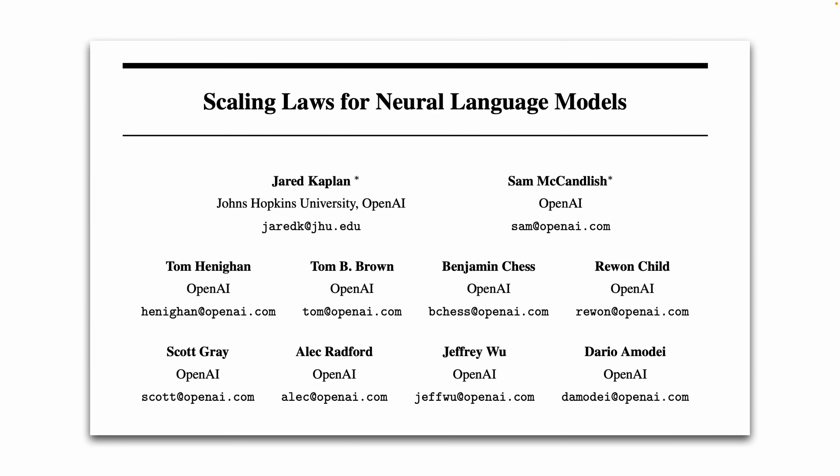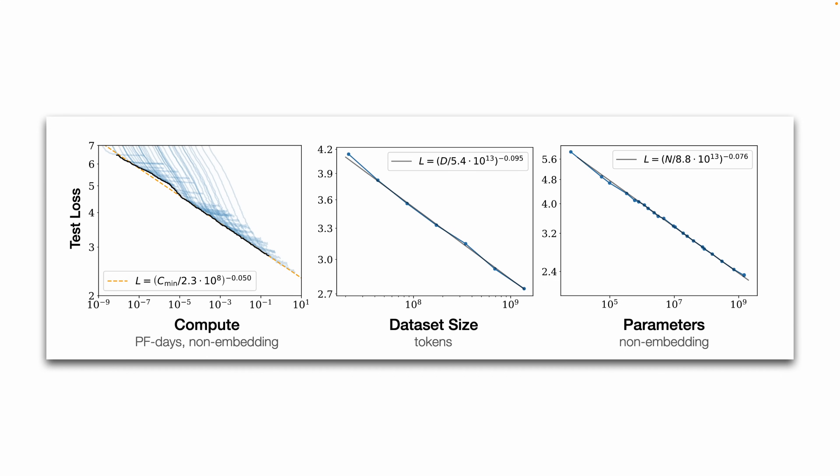This landmark paper from 2020 confirmed what we already suspected: to make models better, we have to go bigger. There are three main directions of scale — compute, dataset size, and parameter count. Knowledge distillation helps us scale along the last two: data and parameters.